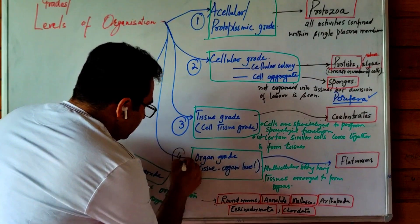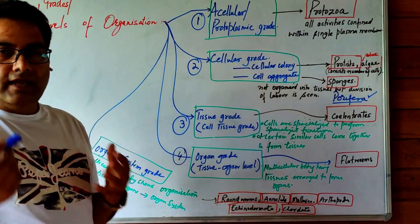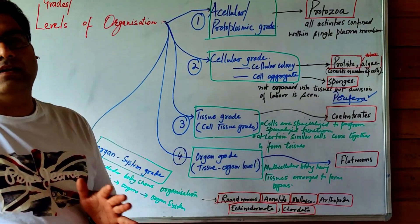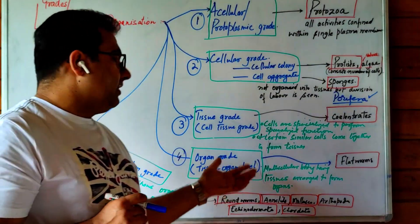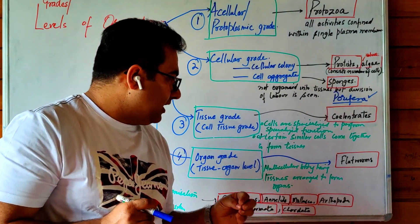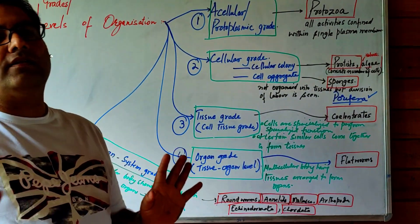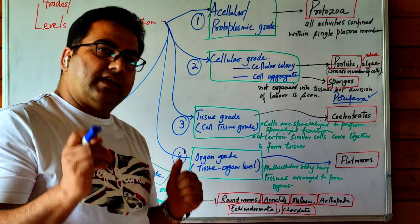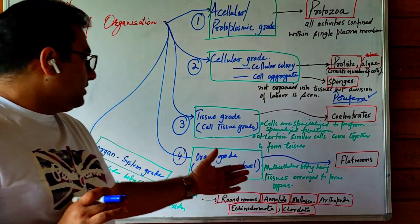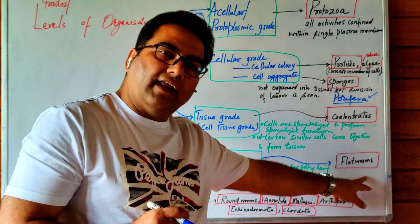The fourth level is the organ grade, also called the tissue-organ level. In all multicellular organisms at this grade, the body has tissues arranged to form organs. Organs are formed, but organ systems are absent. Certain organs can be seen, but not complete systems. This tissue-organ level grade of organization is seen in flatworms.